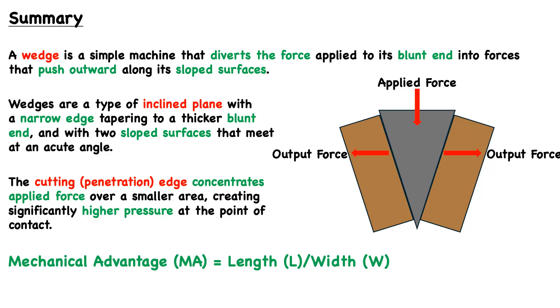At this tip edge, force concentrates over a small area, creating significantly higher pressure at the point of contact. And the mechanical advantage for a wedge is given by the length divided by the width.